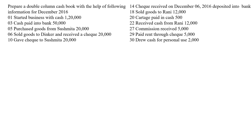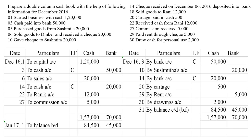Now let us see how to record transactions in a double column cash book. I have taken a few transactions. This is the template of a double column cash book — we will have a cash column and a bank column, two amount columns both in the credit side and in the debit side. This is the only difference between a single column and double column cash book.